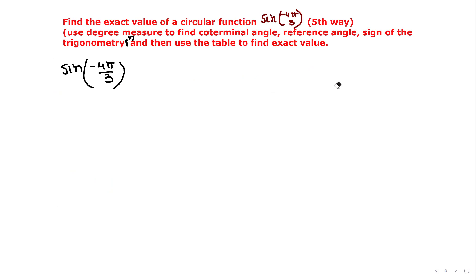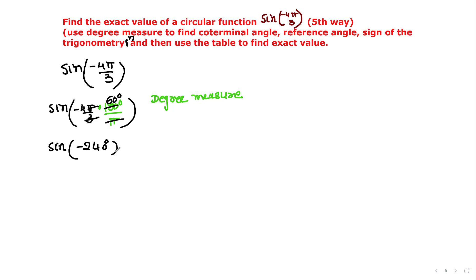The fifth way: change the radian measure into degree measure, find the least positive coterminal angle in degree measure, find the reference angle in degree measure, determine the sign of the trig function in the quadrant, and use the table. First step: multiply by 180°/π and simplify. Next, find the coterminal angle for -240 degrees — we're looking for the least positive one.